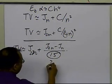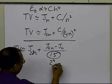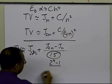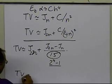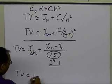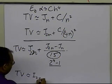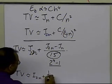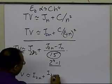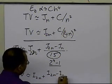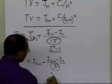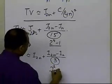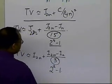In fact, this 15 can be looked at as 2 to the power 4 minus 1. Similarly, when you have two values approximately proportional to i2n plus (i2n minus i2n) divided by 3, that 3 can be looked at as 2 to the power 2 minus 1.